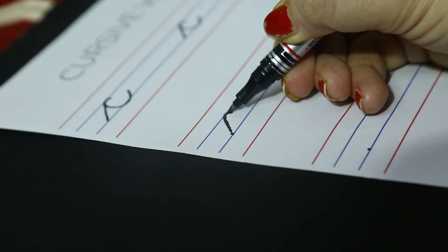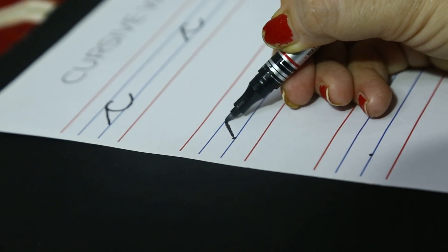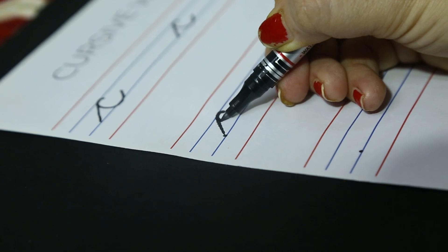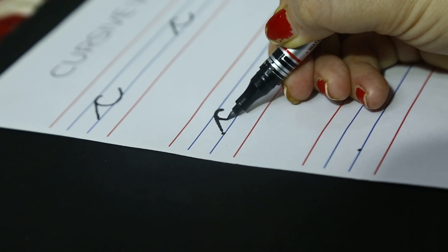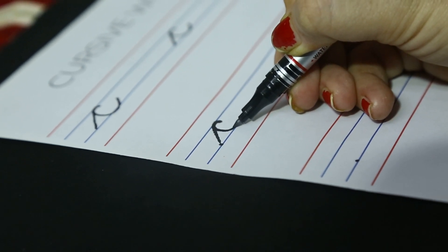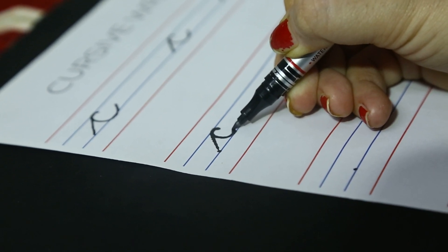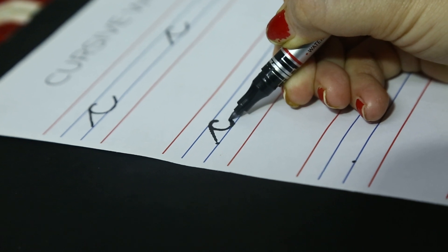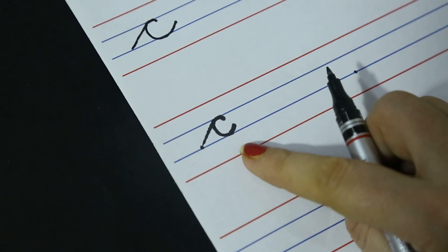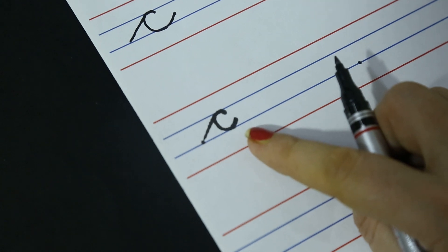Go back, go back. Come down, come down to the third blue line. Without lifting the pencil, go up slightly up. This is cursive letter C.